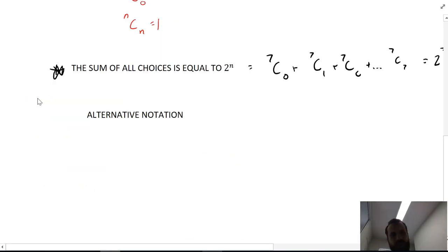One last little thing I want to mention is that NCR has an alternative notation. You can also just write it as like a set of brackets, something like that, N over R. So if I wanted to say, for example, seven choose three, another way to write that is just brackets, seven, three, one above the other.